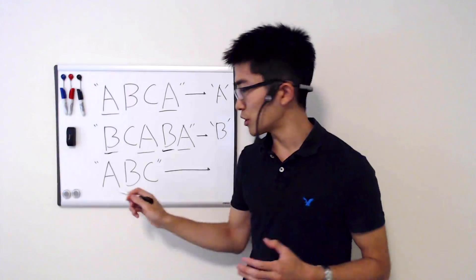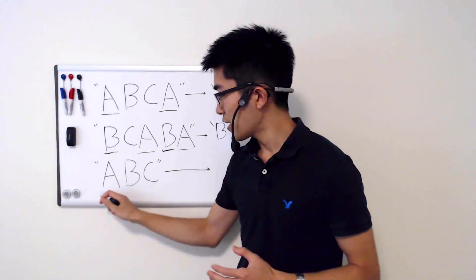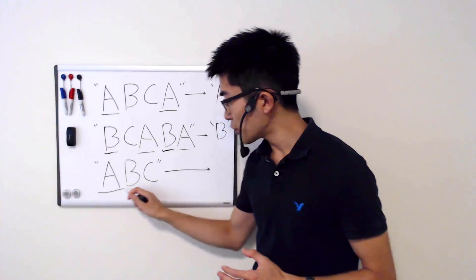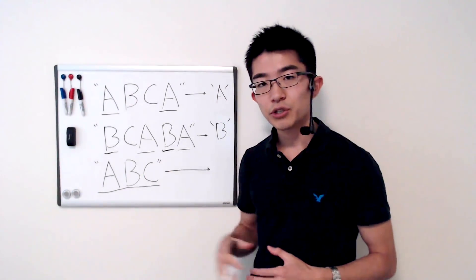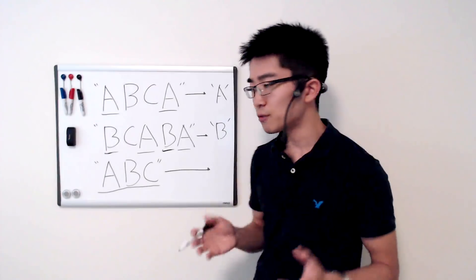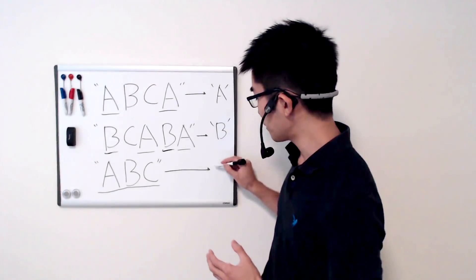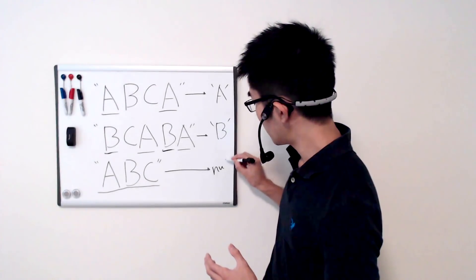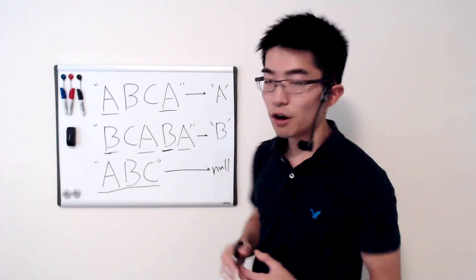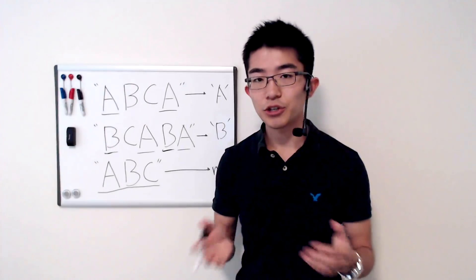If you're given this string — a, b, c — there's no recurring character in the string.